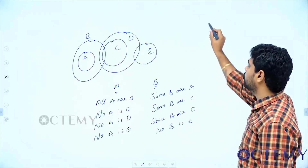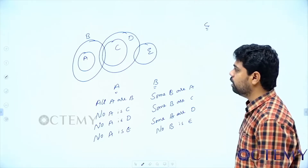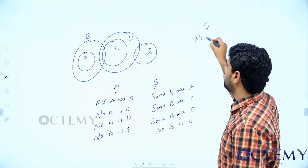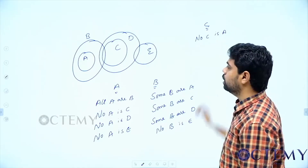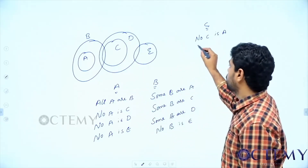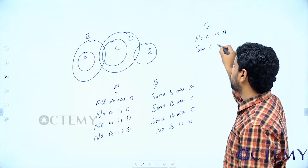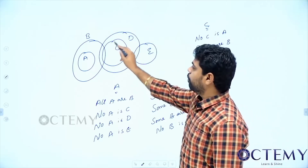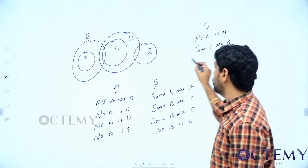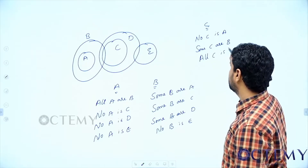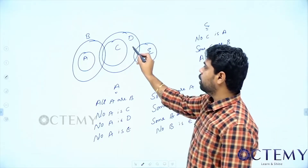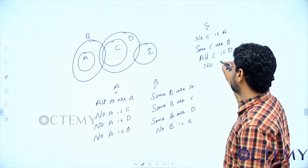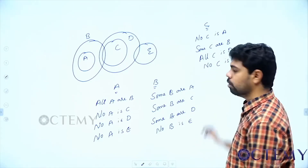Now with respect to C: is there any relation between A and C? No. So no C is A. With respect to B: some C are B. With respect to D: every part of C is inside D. So all C are D.